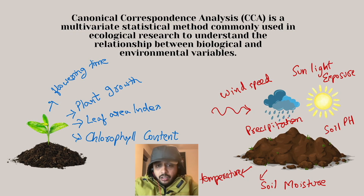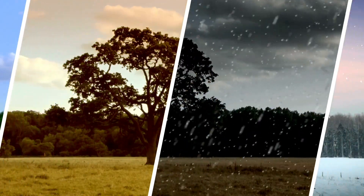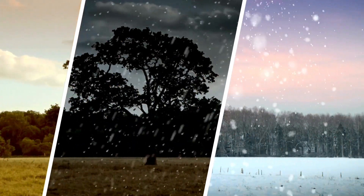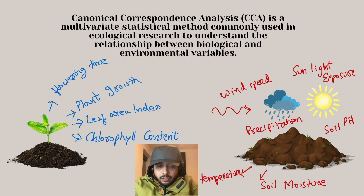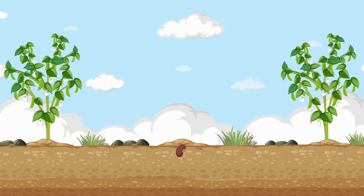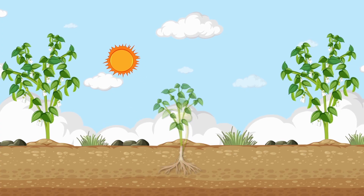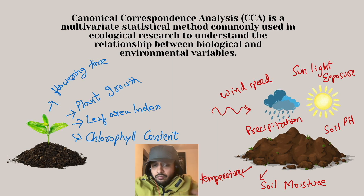Suppose we want to understand how multiple environmental factors collectively influence plant growth — for example, during different seasons how different environmental factors affect plant growth or health. Canonical Correspondence Analysis allows us to explore these multivariate relationships by considering all environmental variables simultaneously. It can tell us, for instance, how the combined effect of increased soil moisture and decreased sunlight exposure during a rainy season will affect growth patterns.